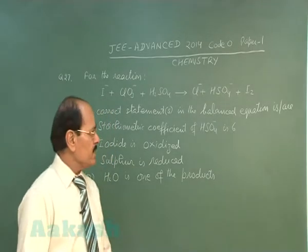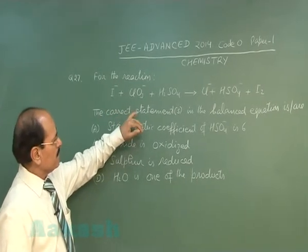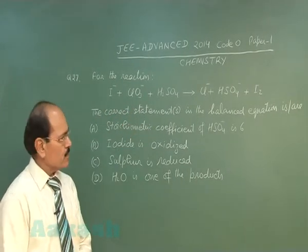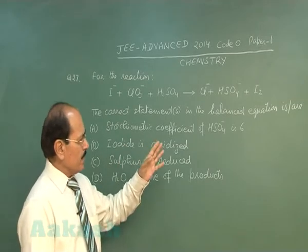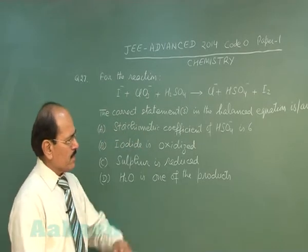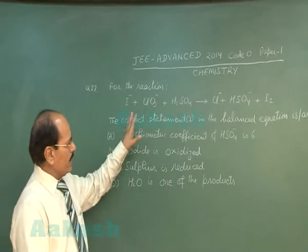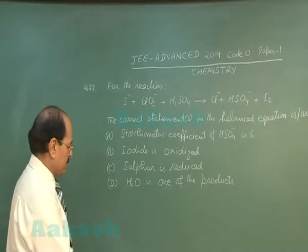Question number 27: For the reaction I⁻ + ClO₃⁻ + H₂SO₄ gives Cl⁻ + HSO₄⁻ and I₂. The correct statements in the balanced equation are - four options are given. Now, if we balance the given reaction we get...